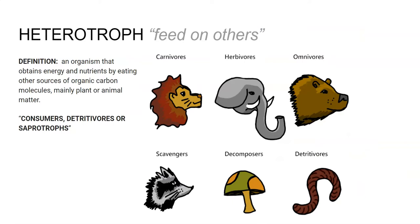Heterotroph means to feed on others. 'Troph' again means where you feed, and 'hetero' means other. So a heterotroph is feeding on something, getting their food from something other than themselves. It's an organism that obtains energy and nutrients by eating other sources of organic carbon molecules, mainly plant or animal matter.